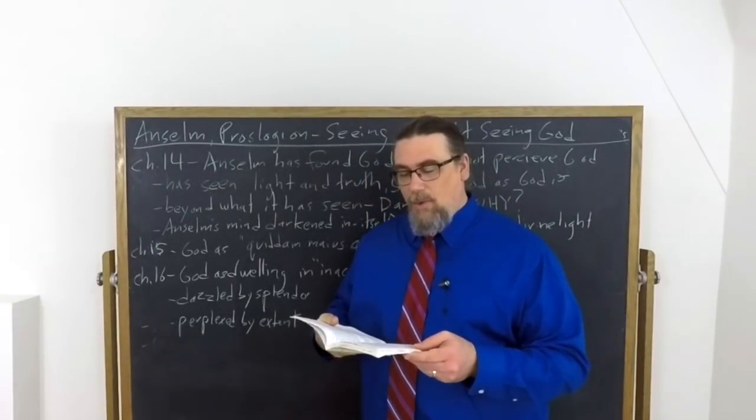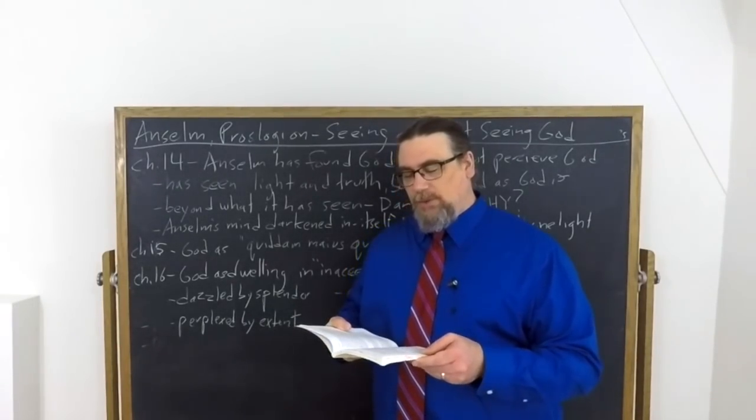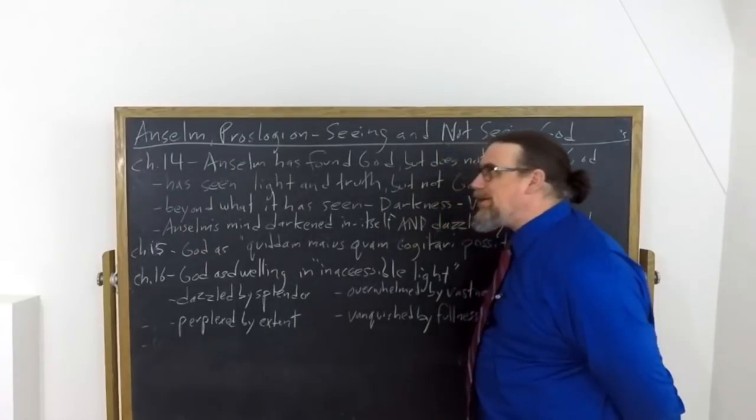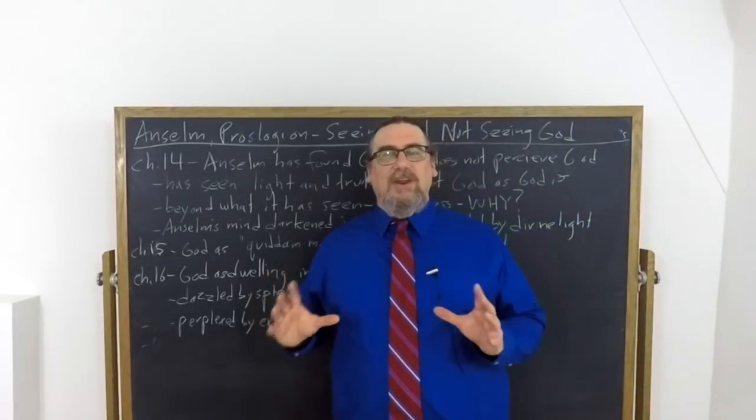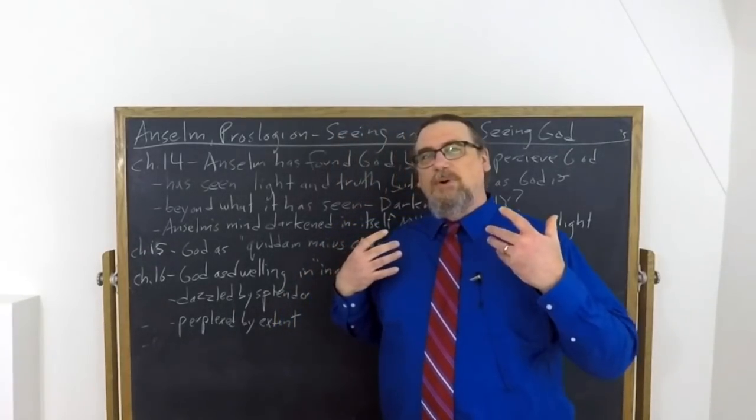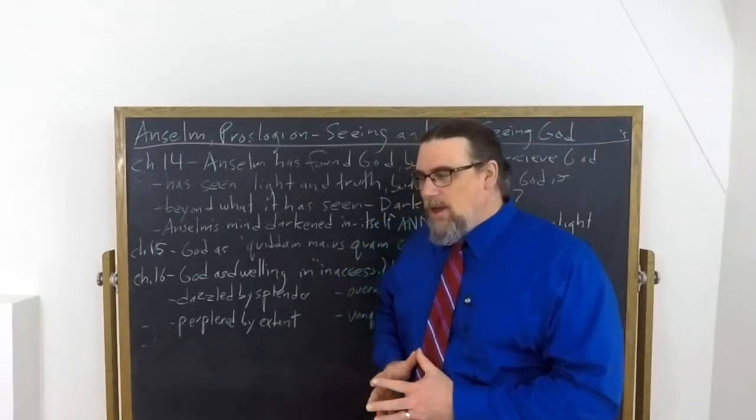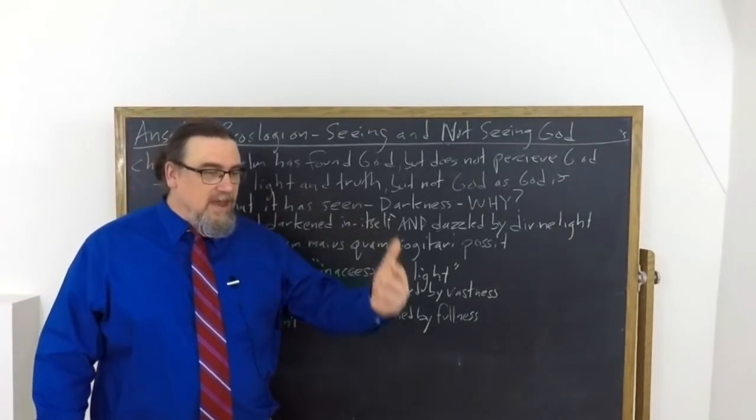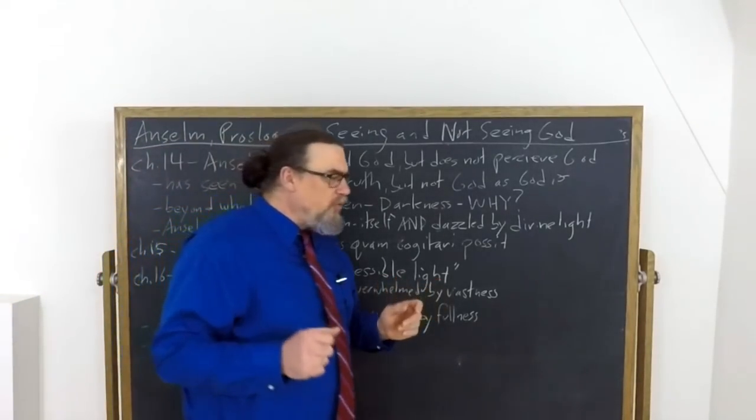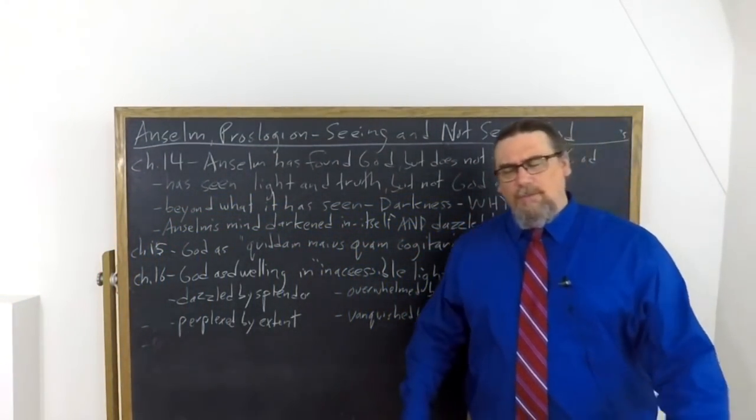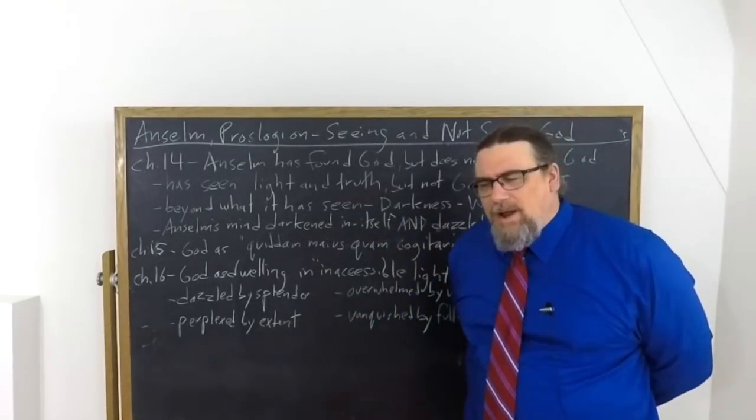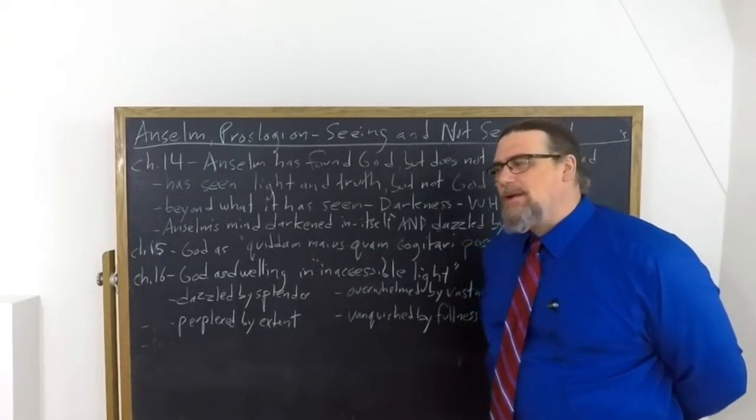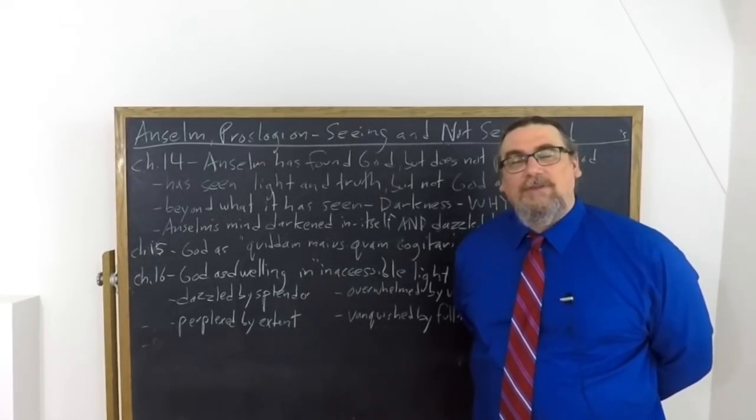Because in chapter 14, which is actually titled how and why God is both seen and not seen by those who seek him, Anselm confesses to himself and to his interlocutor God in this discourse, and to us the readers, that although he has found the God that he's looking for, he doesn't perceive God. There's a sort of lack or privation in his way of grasping God. He has understood God via argumentation, reasoning, using the highest part of ourself, the rational mind about God. And he believes that what he is reasoned about does exist and has the qualities, but he's not having a completely comprehensive grasp of the divine substance.